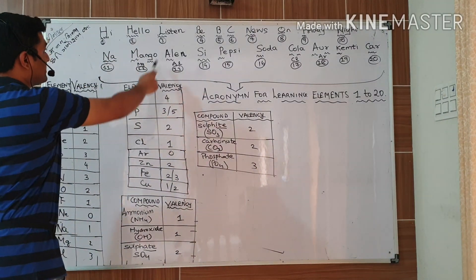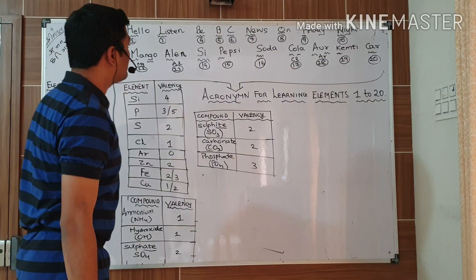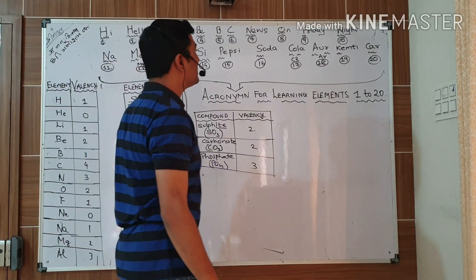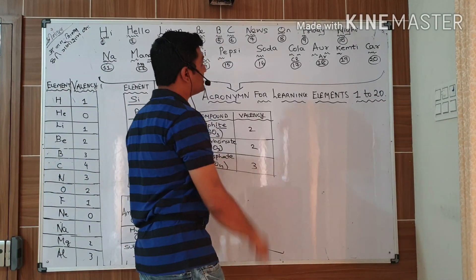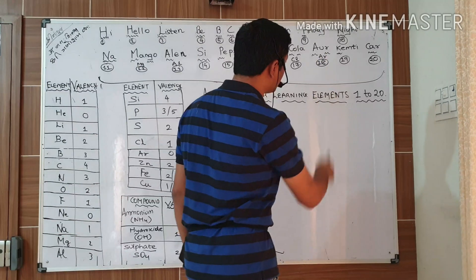2 helium, 3 lithium, 4 beryllium, 5 boron, C carbon, 7 nitrogen, 8 oxygen, 9 fluorine and N stands for neon.